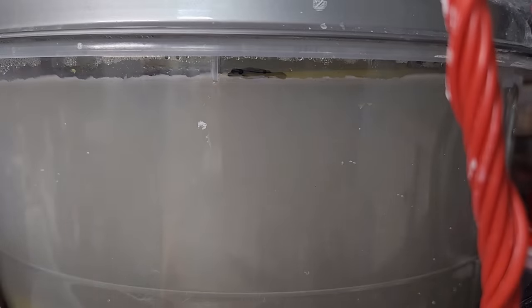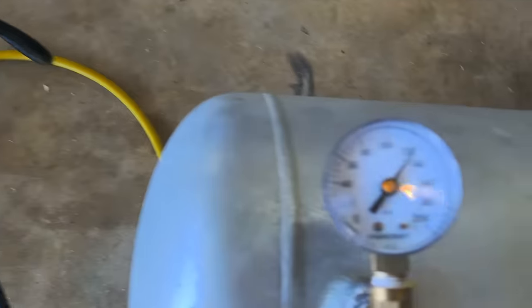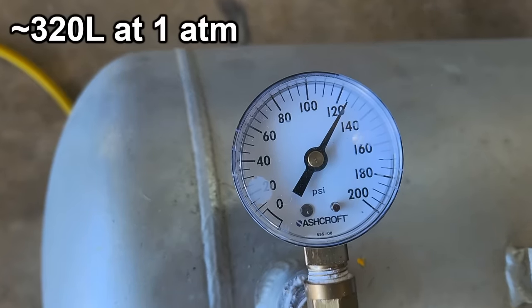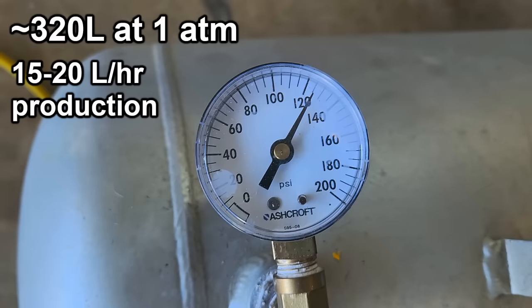So after spending a weekend running the cell, I had enough hydrogen to fill this 10 gallon tank to 125 psi, which translates roughly to about 320 liters of hydrogen. The cell puts out about 15 to 20 liters per hour, depending on the temperature of the electrolyte.